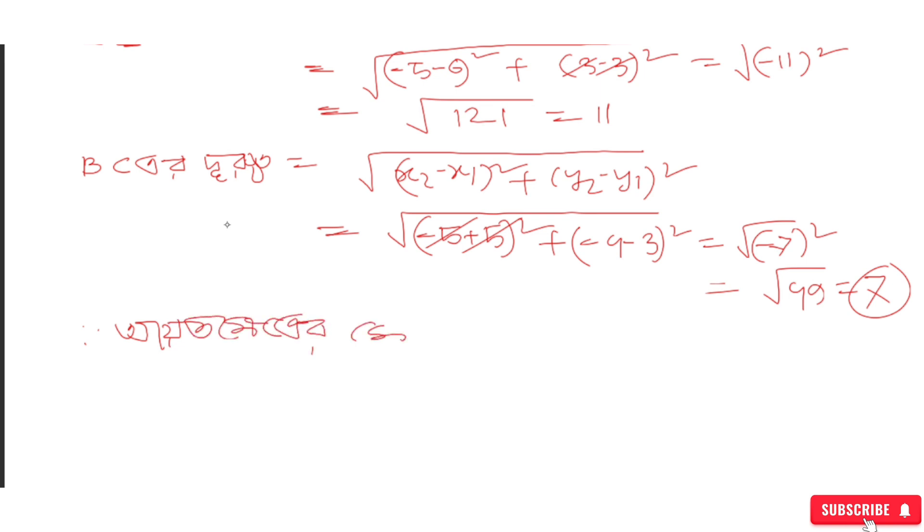This equals 7. So BC equals 7. Similarly, we can calculate the other sides to find that we have a rectangle with dimensions 11 by 7.